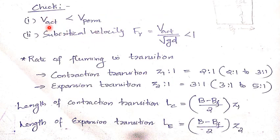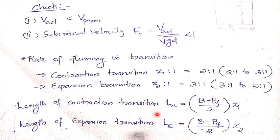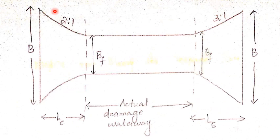For the rate of fluming: contraction transition splay should be between 2:1 to 3:1, and expansion transition splay should be between 3:1 to 5:1. Length of contraction transition LC = Z1 × (B − BF)/2, and length of expansion transition LE = Z2 × (B − BF)/2, where Z1 and Z2 are the splay ratios for contraction and expansion respectively.